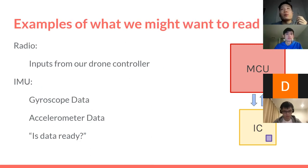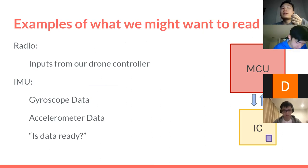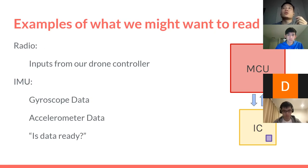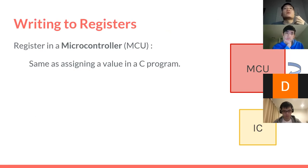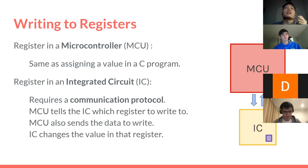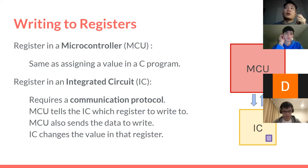Some things we want to read from our external ICs: from the radio we want the inputs from our drone controller, and from the IMU we want the gyroscope and accelerometer data. There's also an acknowledge bit that acknowledges whether you're ready to send or receive data. Writing to registers also requires a communication protocol — the MCU transmits to the IC which register it wants to write to, sends the data, and the IC updates the value in that register. For the radio, we'll write transmission speed and debug info; for the IMU, we'll write the gyroscope and accelerometer sensitivity values.